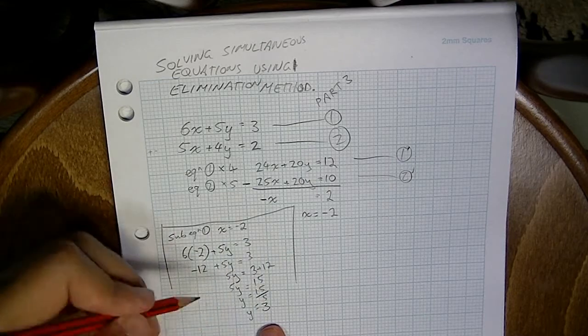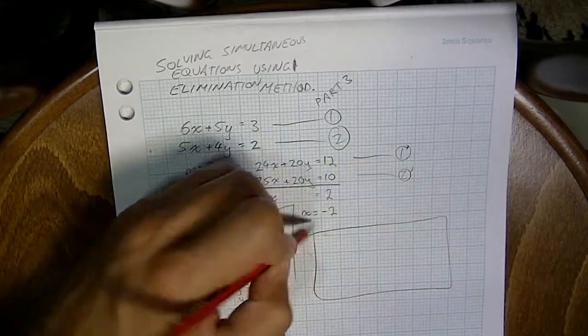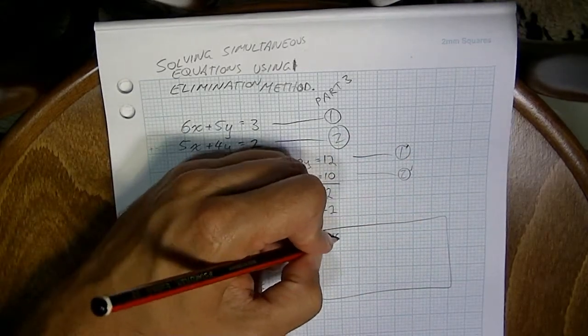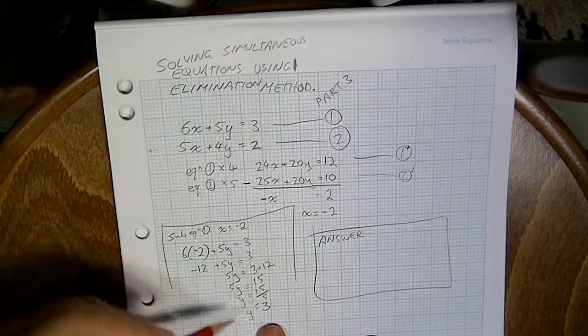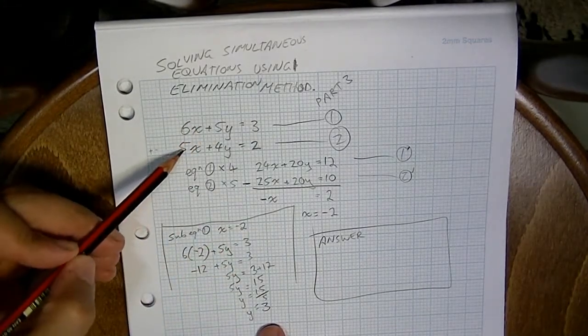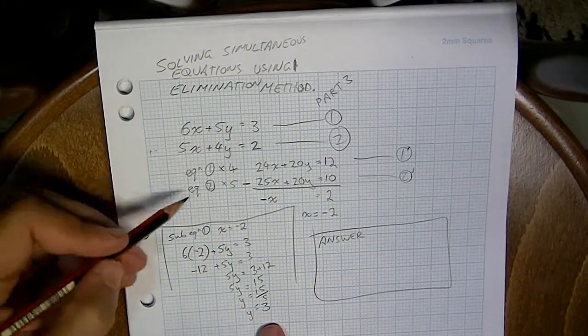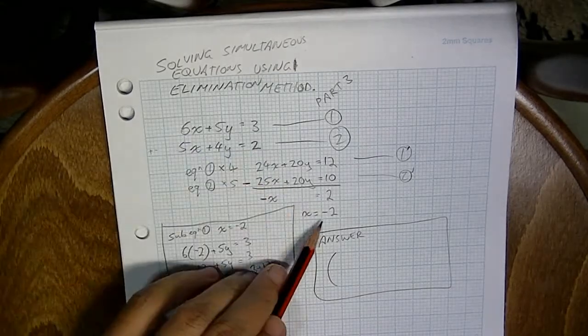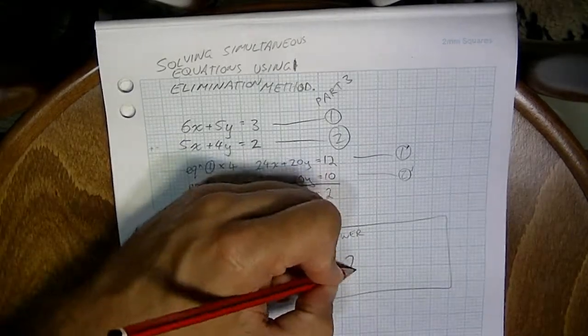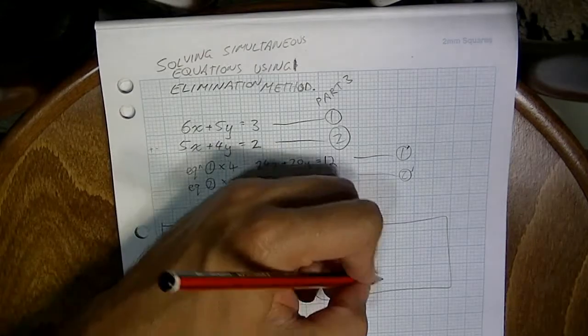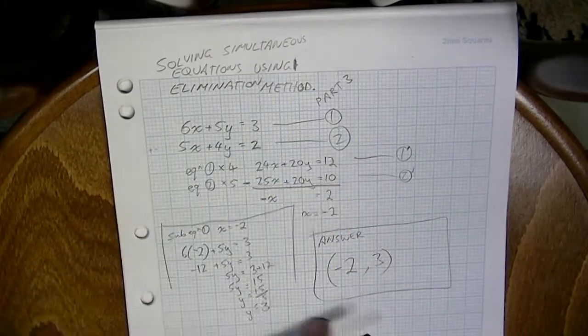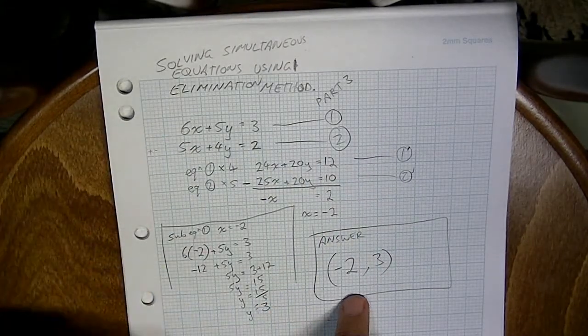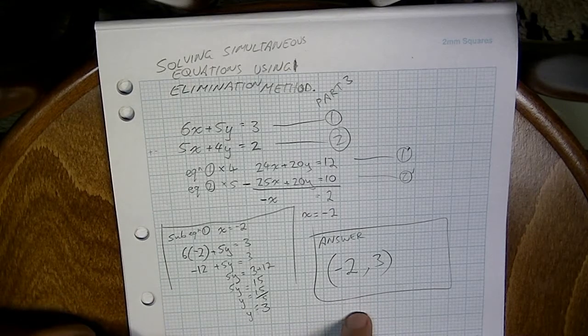Okay, so finally finish it off. Our simultaneous solution, our point at which these two straight lines would meet on a Cartesian plane, is equal to an x value of negative 2, a y value of 3. Okay, that's solving simultaneous equations using the elimination method.